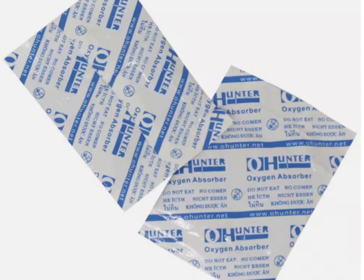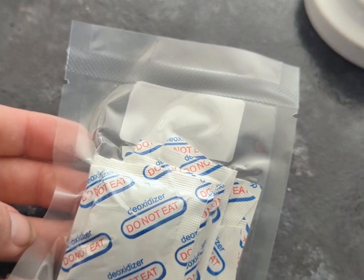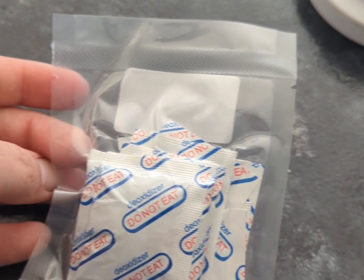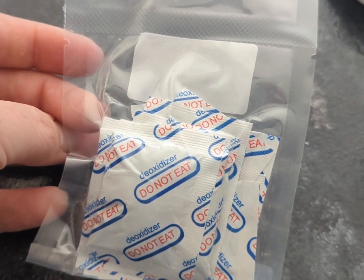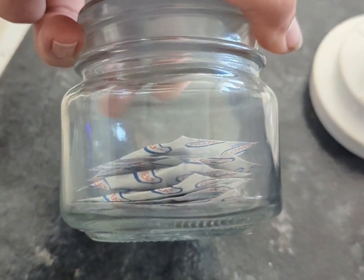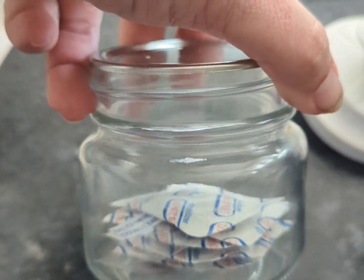You have to work fast when you're working with oxygen absorbers. The way that I have found to keep the oxygen absorbers from getting too much oxygen is using what I need and then putting the remaining oxygen absorbers in a small canning jar.